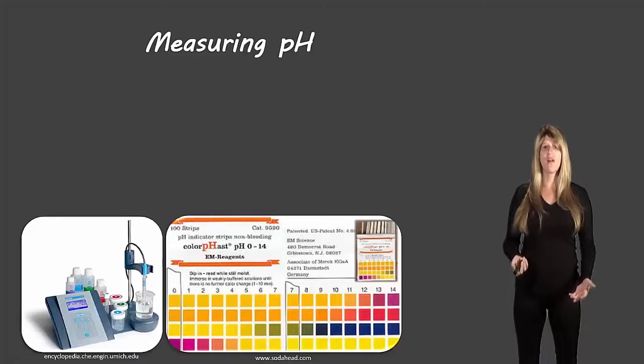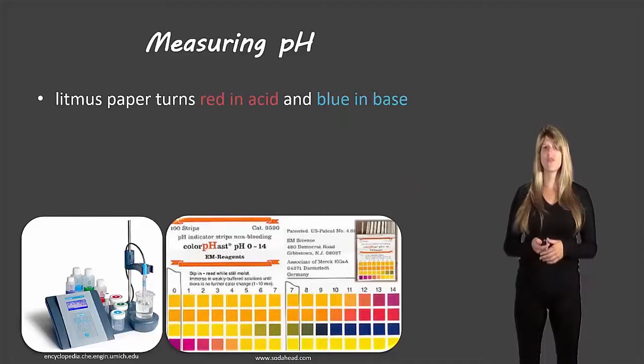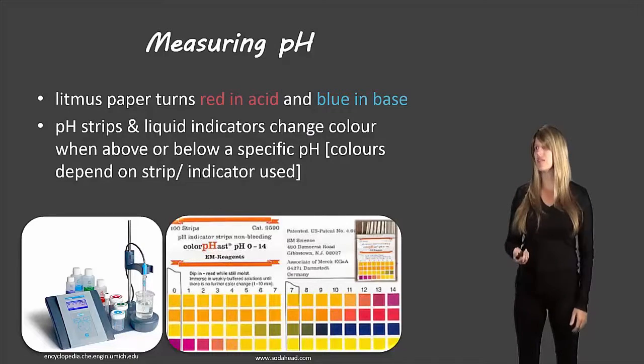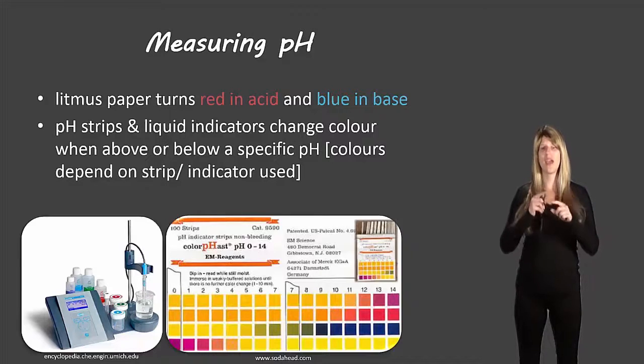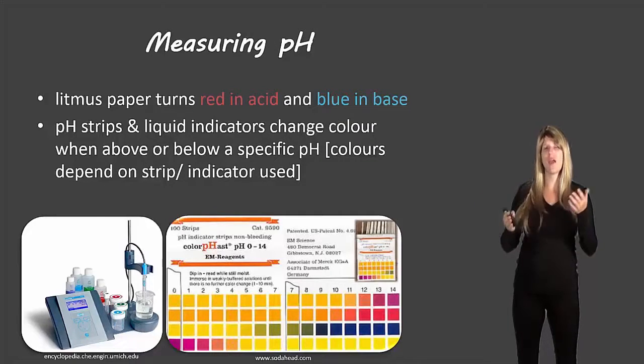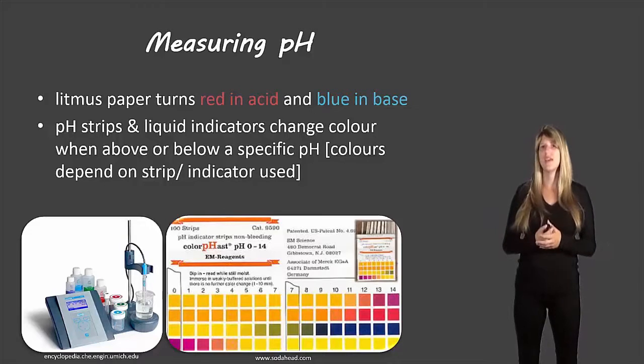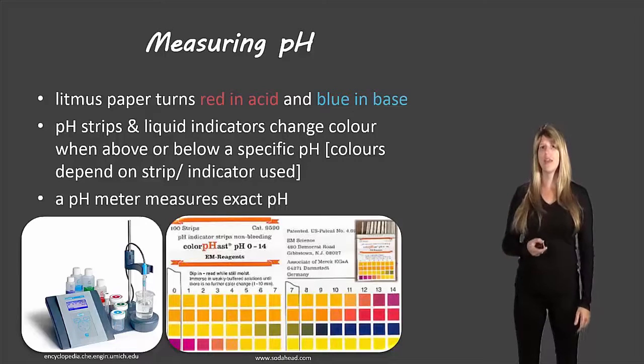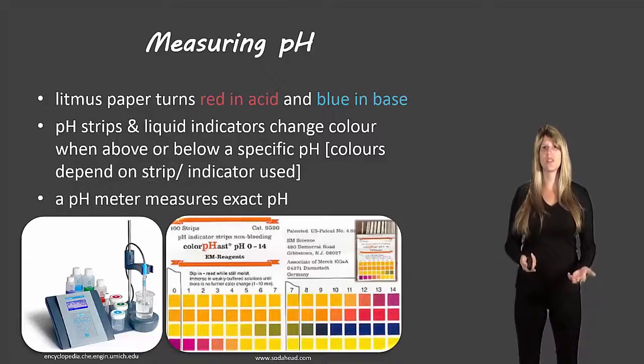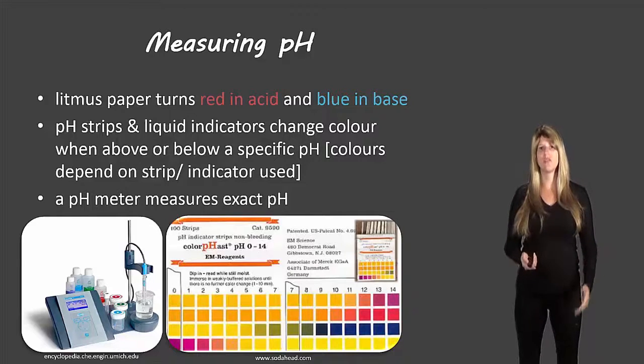So let's talk about how we would measure pH. There are a few different ways. The first is the litmus paper that we talked about earlier. It turns red in acids and blue in bases. There are also pH strips that work similar to litmus paper, only they have more different colors that it can turn. And those different colors specify more specific pHs rather than just acid or base. You can also add liquid indicators that turn various different colors at certain pHs. And then you can use a pH meter which gives you a very specific pH, usually to 1 or 2 decimal points.